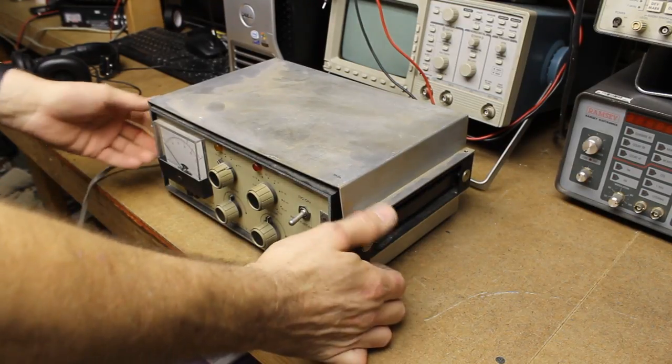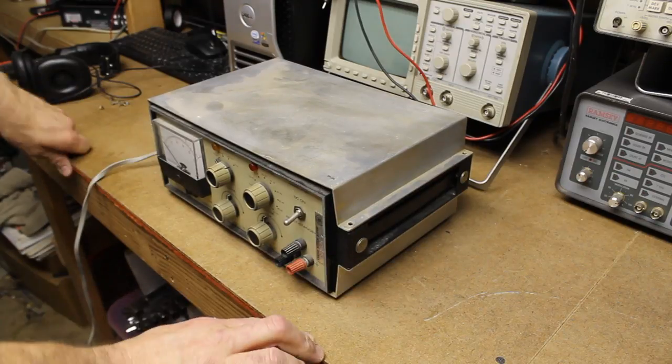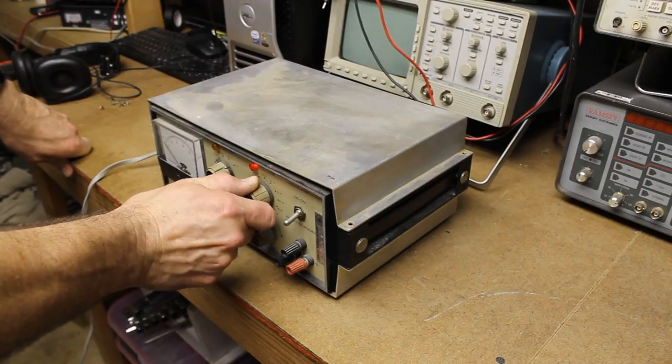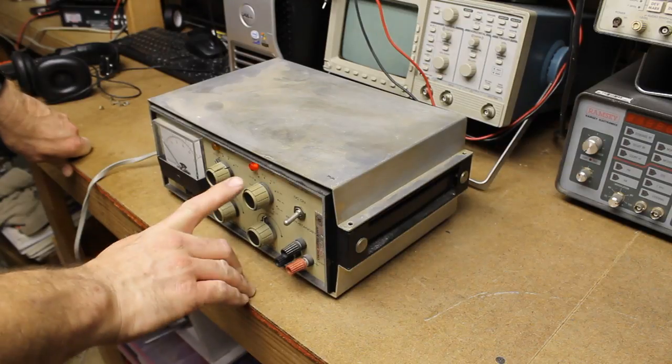Alright, let's see here. Let's switch to on in the low range. We do have an indicator lamp.